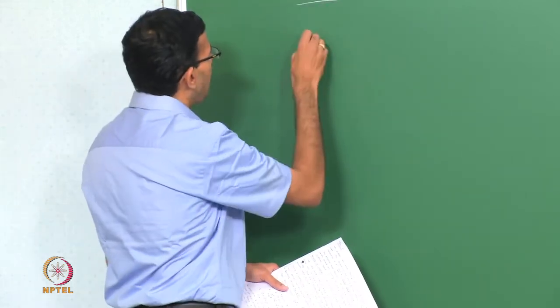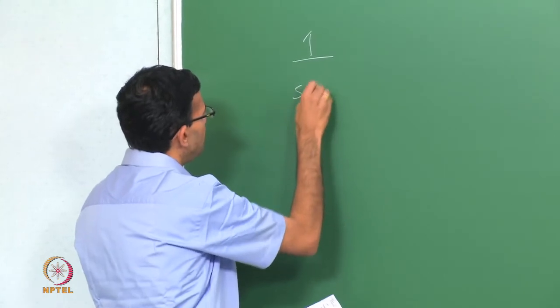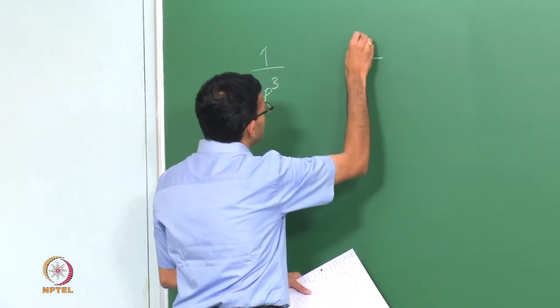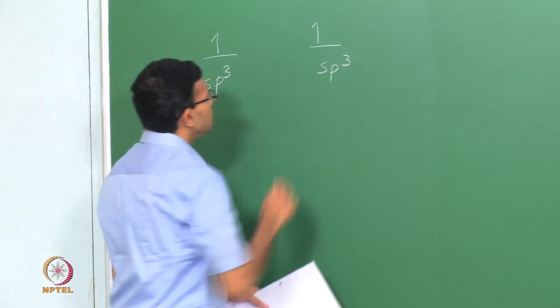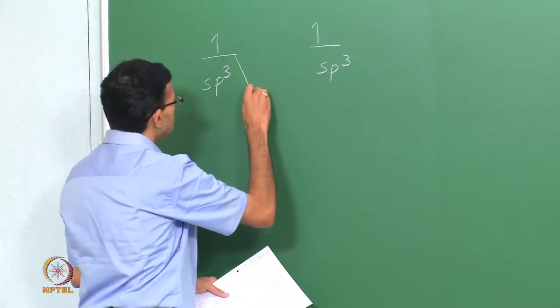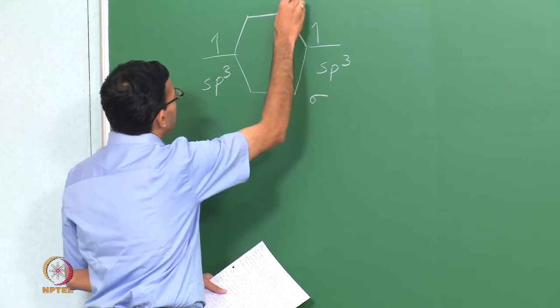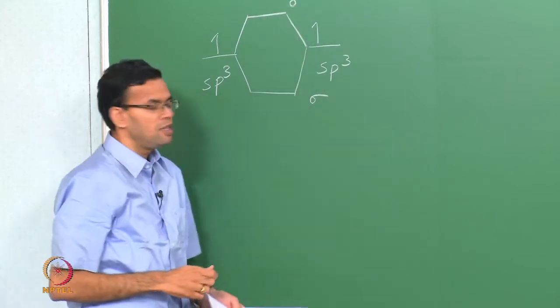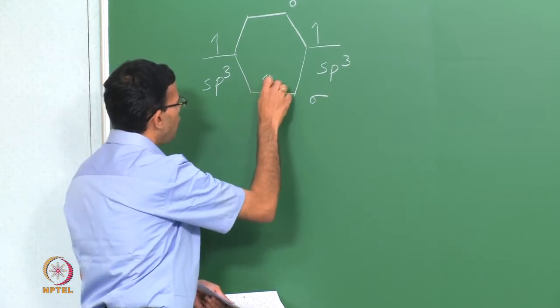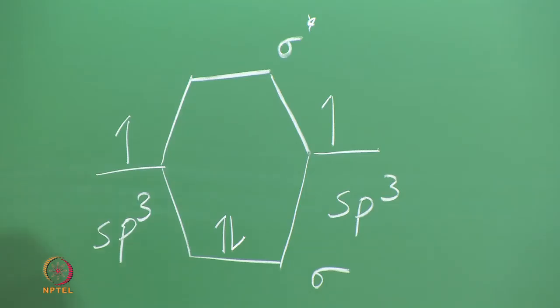If you have 2 silicon atoms, they form a bond between them. This forms the bonding orbital, which is the sigma, and the antibonding orbital, that is the sigma star. If you have a silicon atom with 1 sp3 orbital and another silicon atom with another sp3 orbital, they form a bond. Both electrons will go to the sigma, so the bonding orbital is full and the antibonding is empty.